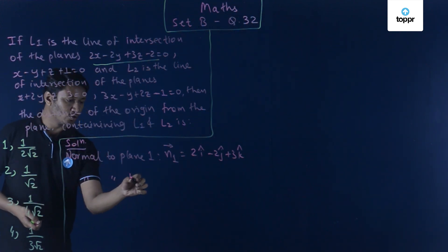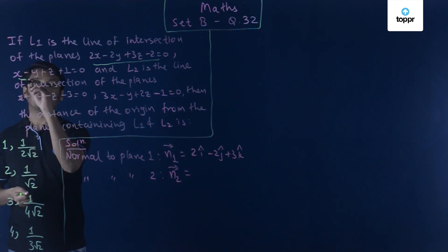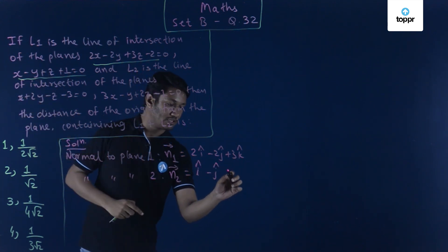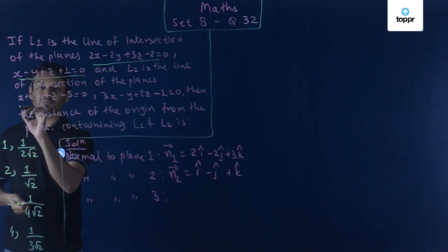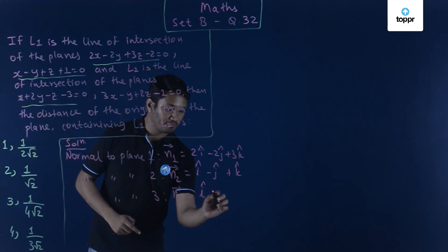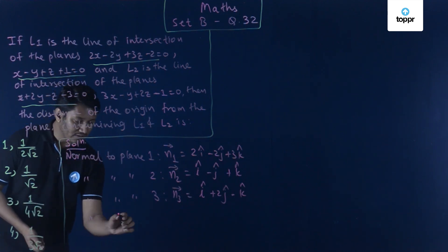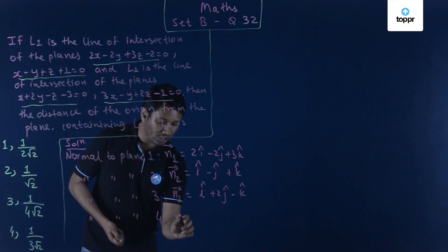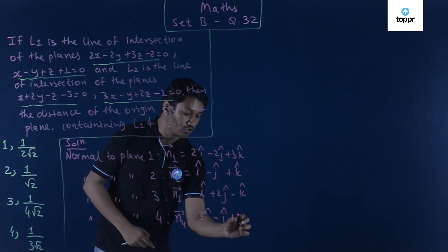Similarly, normal to plane 2: N2 = i − j + k. Normal to plane 3: N3 = i + 2j − k. And finally, normal to plane 4: N4 = 3i − j + 2k.